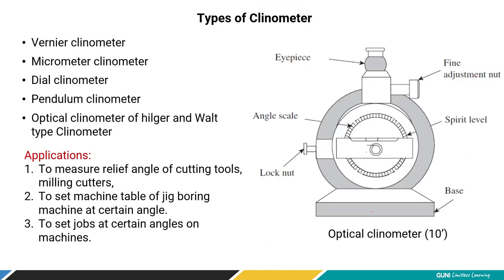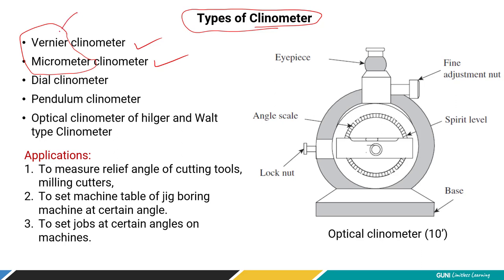Normally the clinometer measures angles up to 10 minutes. There are types of clinometers: vernier clinometer, micrometer clinometer — which uses micrometer-level linear measurement to read angles — dial clinometer, pendulum clinometer, and optical clinometer.